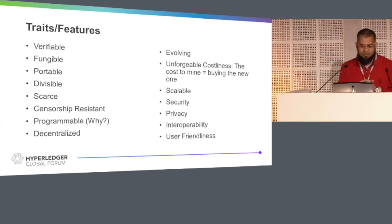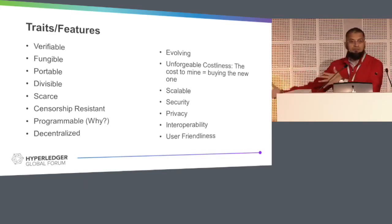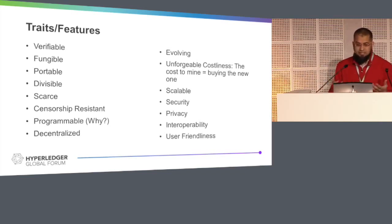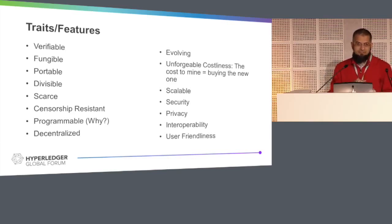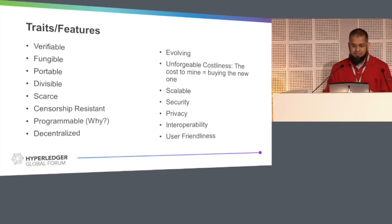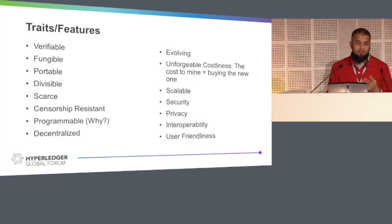Decentralization — all the genes are decentralized as well. People replicating and reproducing in Australia are totally different from people replicating in Pakistan or in the USA, so they have different kinds of traits and DNA systems. DNA and biological evolution is decentralized too. Then we need evolving — something needs to change and be adapted. Unforgeable costliness: the cost to mine a coin equals buying a new one — you have to get all the hashing power to corrupt something. Scalable — clearly we need it. Security, privacy, interoperability, and user friendliness.